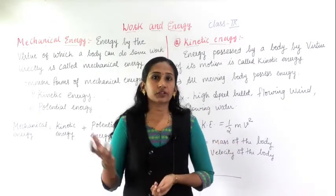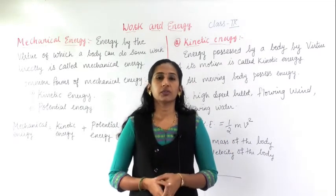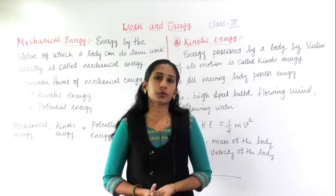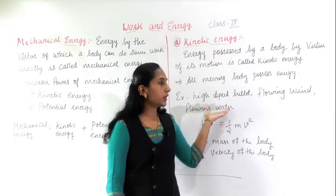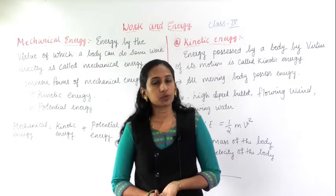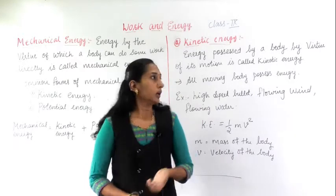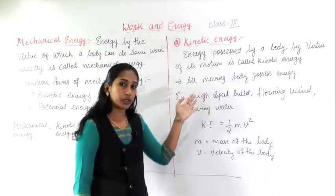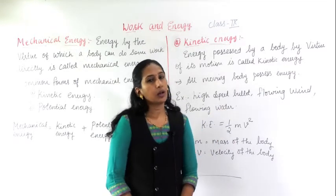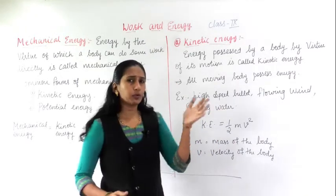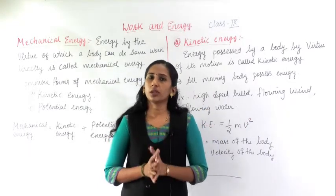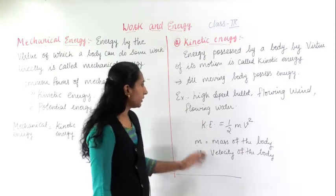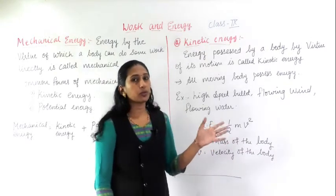Because of kinetic energy, you know how electricity is generated. When water falls on a turbine, the kinetic energy of the water moves the turbine and electricity is produced. So kinetic energy is the energy possessed by a body by virtue of its motion. Examples include a high-speed bullet, flowing wind, and flowing water. Any moving body possesses energy — without energy, nobody can move.